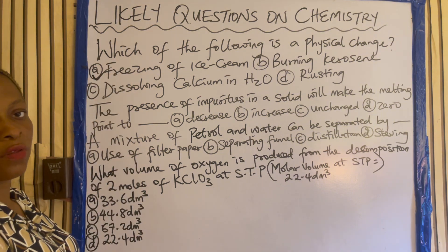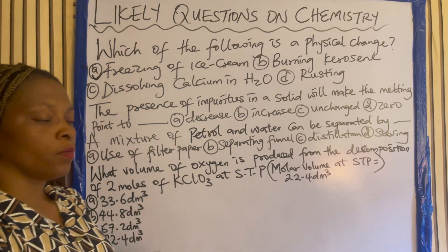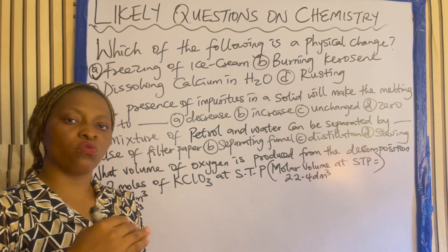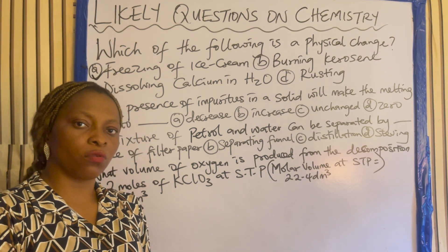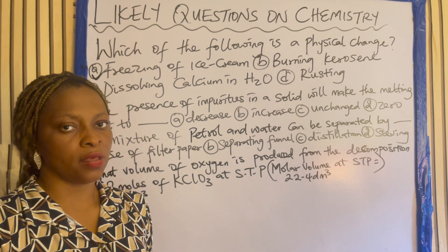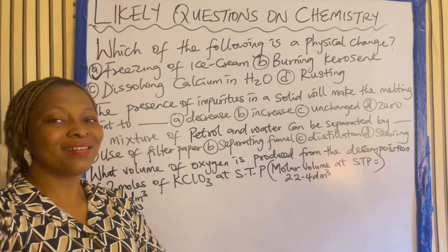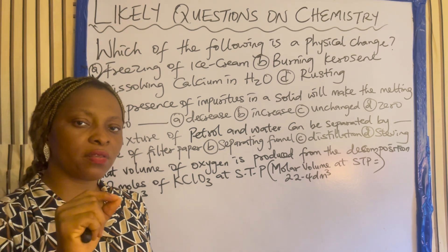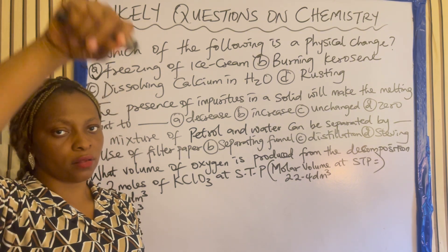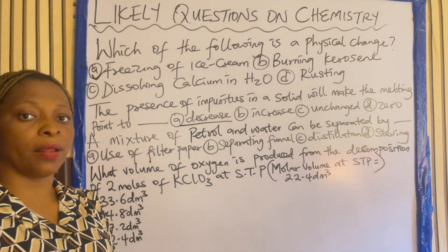The answer is freezing of ice cream. Now, the presence of impurities in a solid — what will be the effect on the melting point? Definitely, the melting point will decrease. Instead of being at zero, it will go to minus two or minus five as the case may be. But if it has to do with the boiling point, the boiling point will increase. Once there is impurity in a solid, the melting point will decrease while the boiling point will increase. So the answer to this question is decrease.